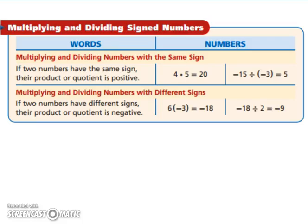Multiplying and dividing signed numbers. Multiplying and dividing numbers with the same sign. If two numbers have the same sign, their product or quotient is positive. So if they're both negative, if they're both positive, they're the same sign, your result is going to be positive. If you're multiplying and dividing numbers with different signs, then your result is going to be a negative. So whether it's a positive times a negative or a negative divided by a positive, as long as the signs are different, your answer is going to be a negative if you're multiplying or dividing.